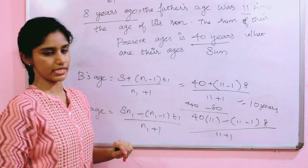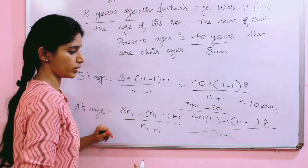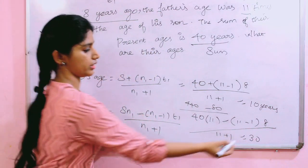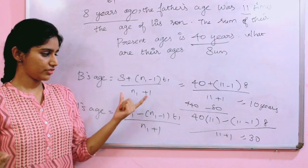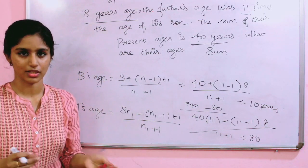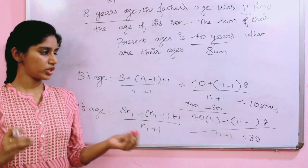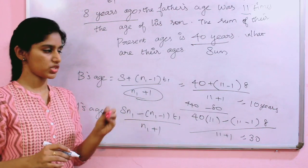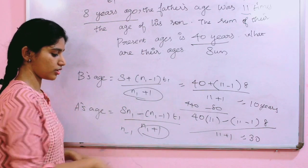What is 440 minus 80? We'll get 360. 360 by 12. So if you divide 360 by 12, we'll get 30. A's age equals 30 years. By this sum formula, we can solve this problem.